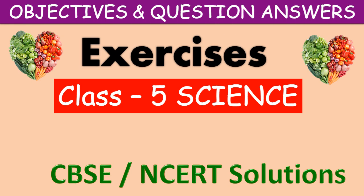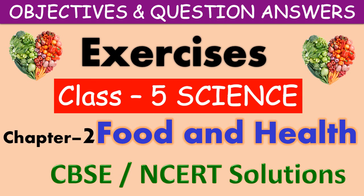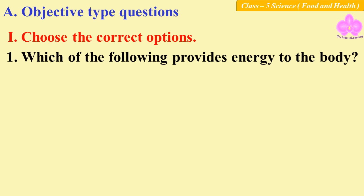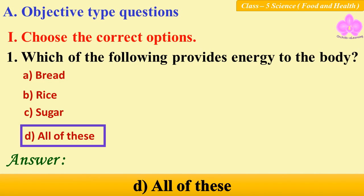Hello my friends, welcome to Orchids E-Learning. Today let us solve the objectives and question answers from the lesson Food and Health of Classified Science. Objective type questions, question number one: which of the following provides energy to the body? Option A: bread, B: rice, C: sugar, D: all of these. Answer: D, all of these.